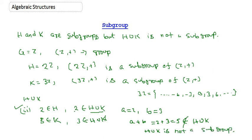I want you to find the conditions under which, if we have two subgroups H and K, their union is also a subgroup. Find an example or find the conditions where their union will be a subgroup. Thank you for watching.